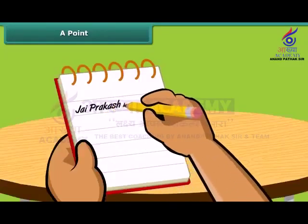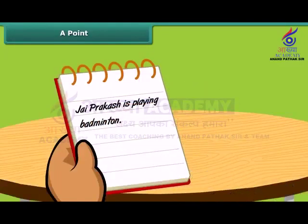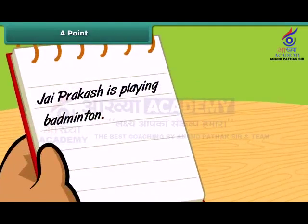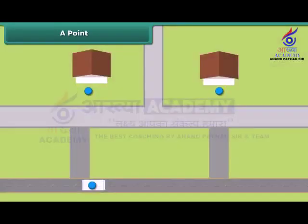A full stop at the end of a sentence denotes a complete sentence. The full stop is a point with a dimensionless shape. The almost invisible tiny dot made by the sharp tip of a pencil is the nearest idea to a point. A point determines the location — it tells us about the position.